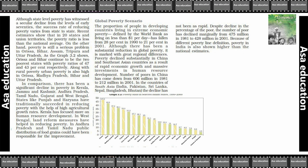Regarding the global poverty scenario, the proportion of people in developing countries living in extreme economic poverty — defined by the World Bank as living on less than $1 per day — has fallen from 28% in 1990 to 21% in 2001.